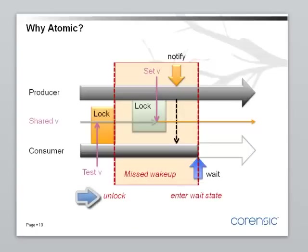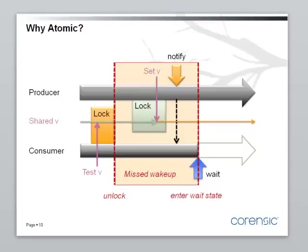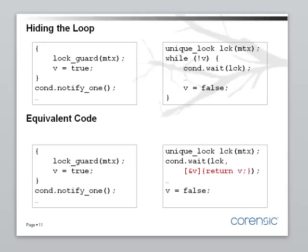Let me show what would happen if these things were not atomic. Suppose that unlock happens before entering the wait state, and there is a window in between. The consumer tests v under the lock and releases the lock. At this point, the producer has a chance of taking the lock, setting v, and sending the notification. But this notification is lost, because the consumer is not yet in the wait state. And remember, the condition variable has no memory — it can only wake up another thread if that thread is in the wait state.